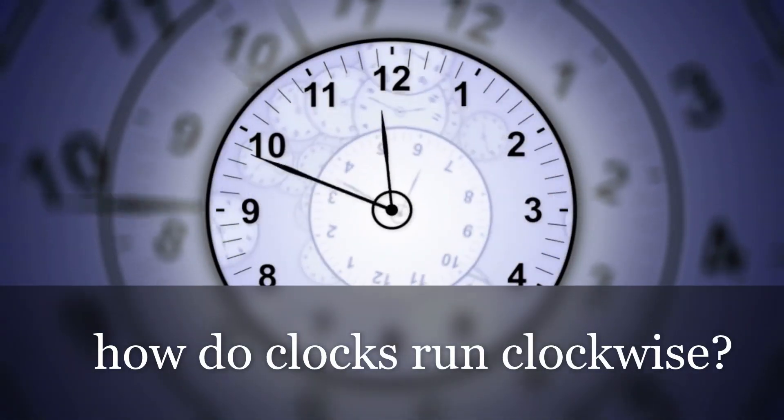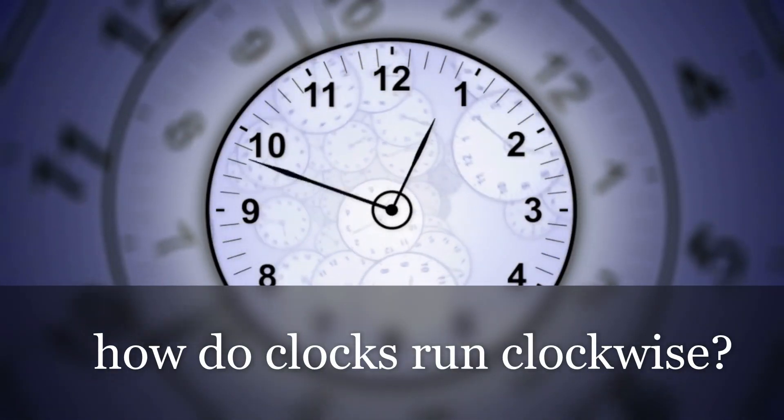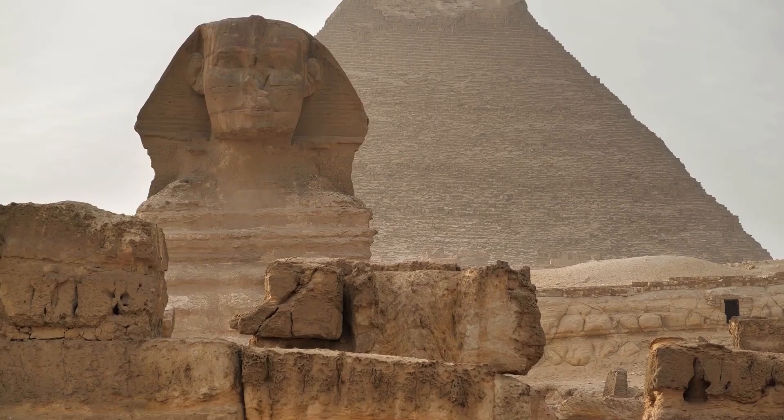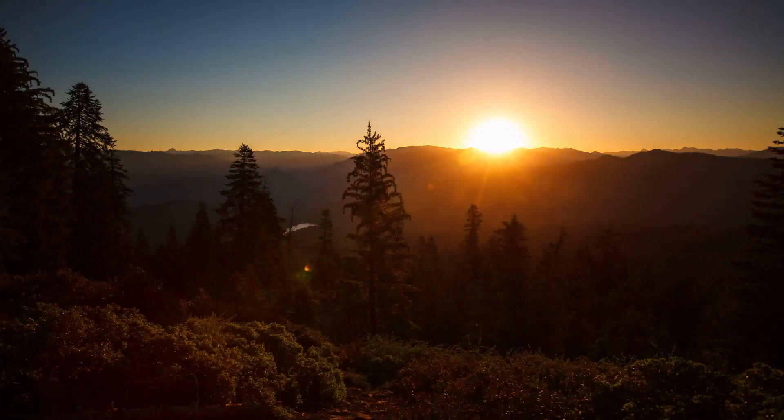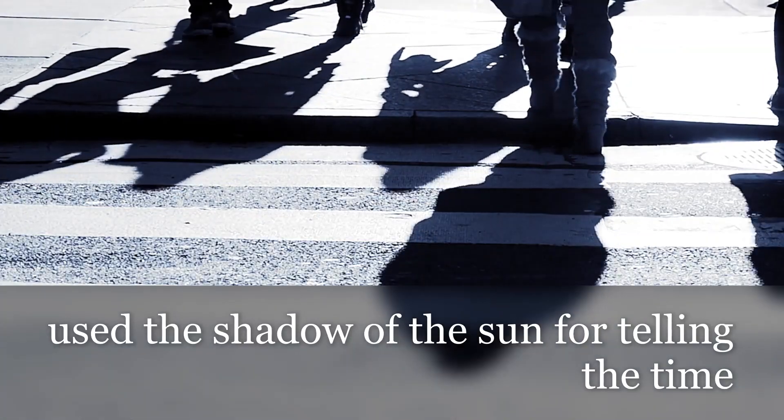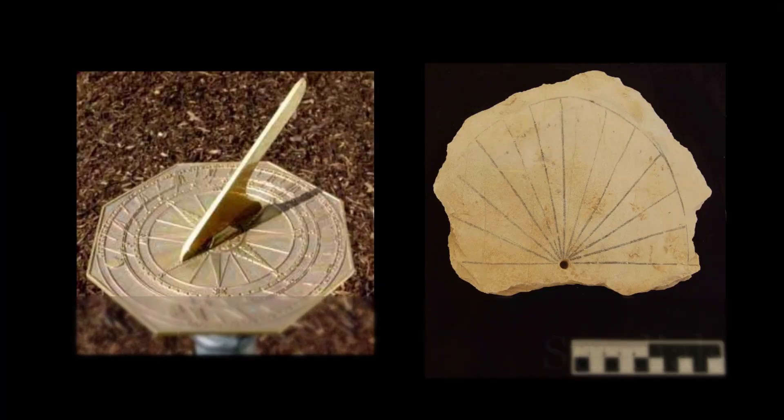Anyhow, let's come to the question. How do the clocks run clockwise? The early civilization of Egypt used the shadow from the sun for telling the time, also known as sundials.